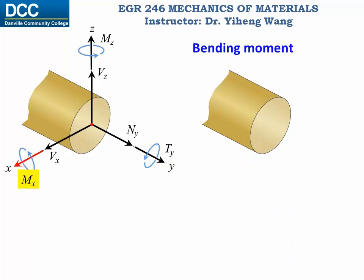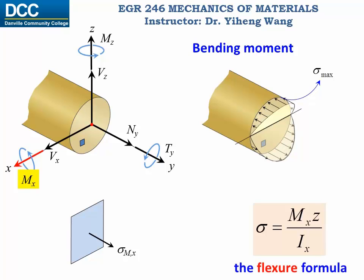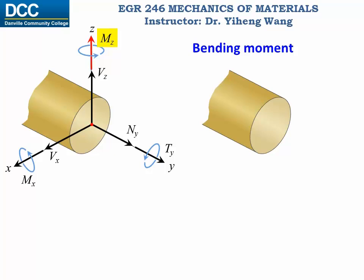For the bending moment, the normal stress follows a linear distribution changing from zero at the x-axis to maximum at the location furthest away from the centroidal axis. For an arbitrary point on this cross section, its normal stress is determined through the flexure formula, where Ix is the moment of inertia of the area with respect to the x-axis, and z is the perpendicular distance from this point to the x-axis.